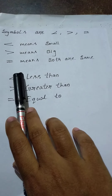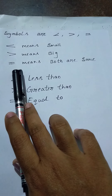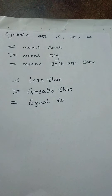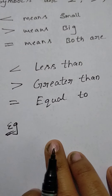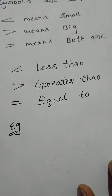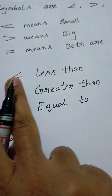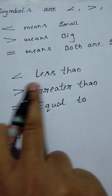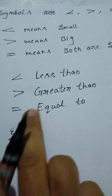Equal to means both numbers are the same. When both numbers are equal, it is called equal to, and in that situation you use this symbol.